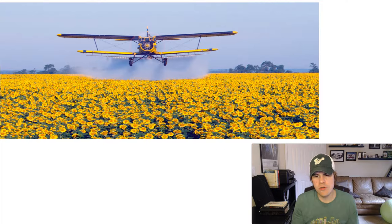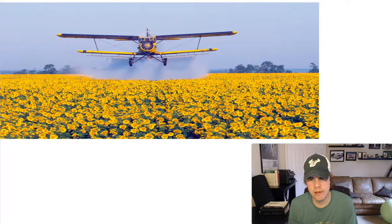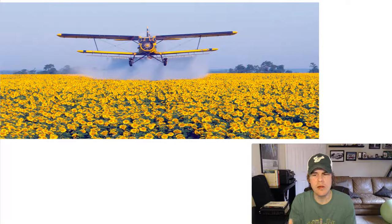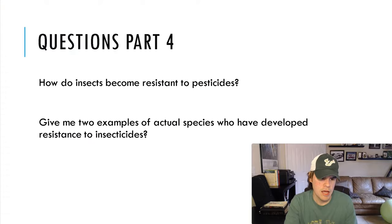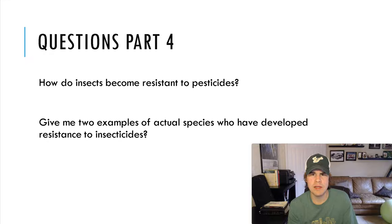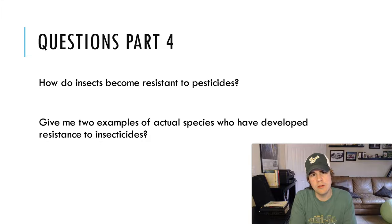This is called crop dusting — spraying insecticide on fields. What scientists found is that insecticides kill insects, but eventually insects change and become resistant to insecticides, much like bacteria become resistant to antibiotics. Do some research: how do insects become resistant to pesticides? What exactly must happen for them to become resistant? Give me two real-life examples of a species that evolved resistance to a specific pesticide.